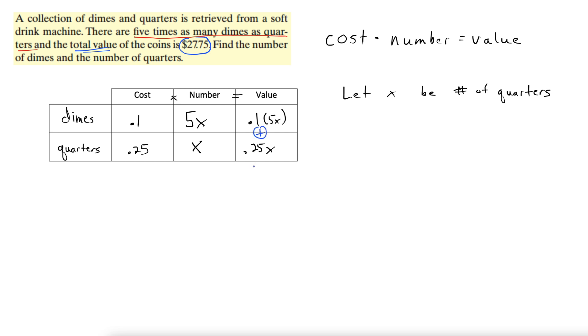So I'm going to add these together, equals 27.75, and there is our equation. So we use that whole table just to get this one equation, so let's pull it out and just focus on that equation. 0.1 times 5x plus 0.25x equals 27.75.